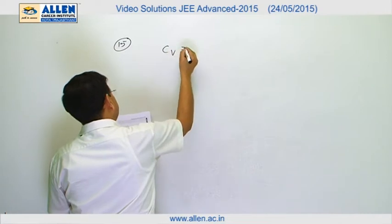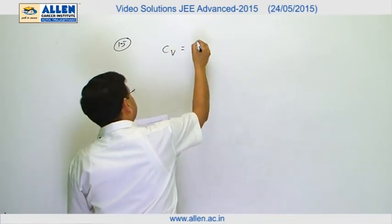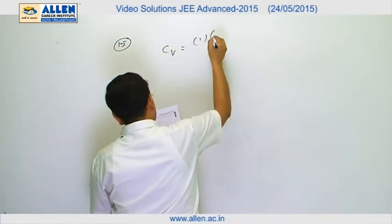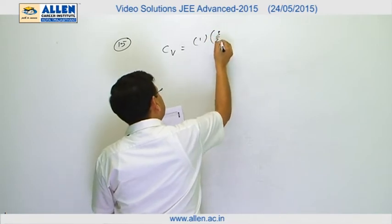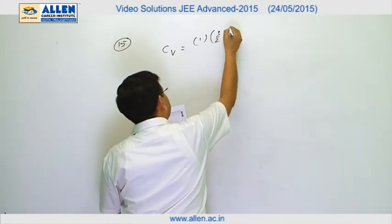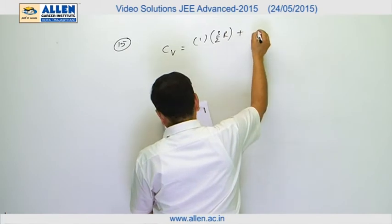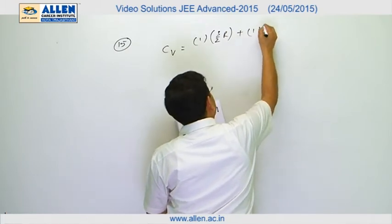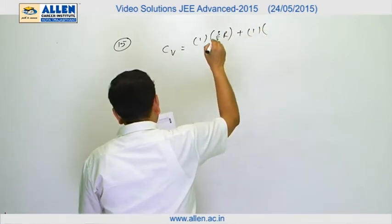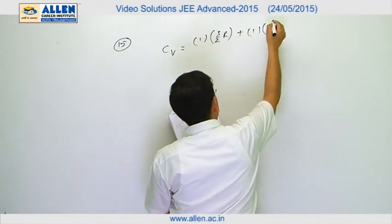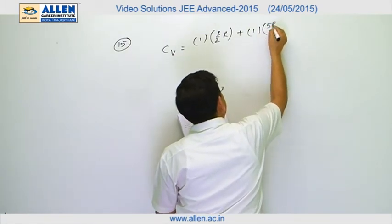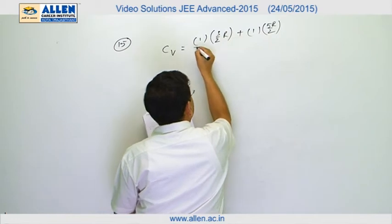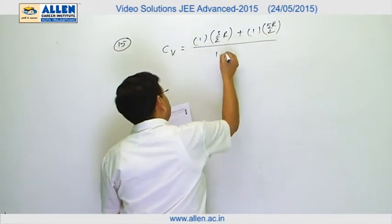If we find Cv for this mixture, we'll get n for monoatomic, that is 1 into 3 by 2 R, plus 1 into Cv for helium, that is 5R by 2, divided by n1 plus n2.